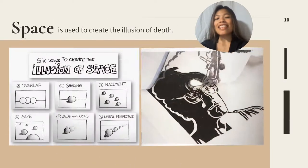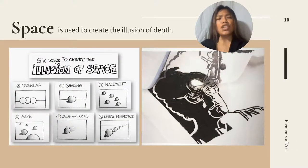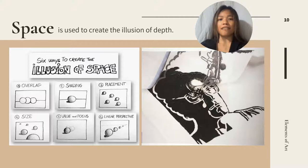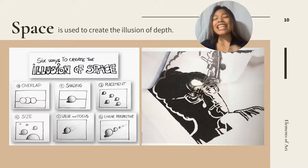Seventh and last is Space. It is used to create the illusion of depth. Space can be two-dimensional, three-dimensional, negative, and or positive. There are six ways to create the illusion of space. Can we see the illustration below?